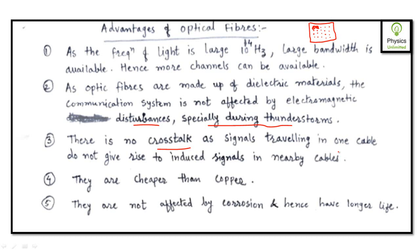Fourth, optical fibers are cheaper than copper — glass and plastic are much cheaper than copper. Fifth, they are not affected by corrosion and hence have a longer life. Plastic fibers have less life compared to glass fibers as they can be scratched more easily, but both are far superior to copper in terms of corrosion resistance and longevity.